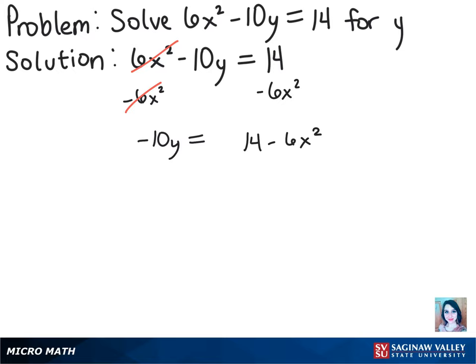Just to make things a bit more convenient for us, let's multiply that all by negative 1. That way we get 10y equals 6x squared minus 14.